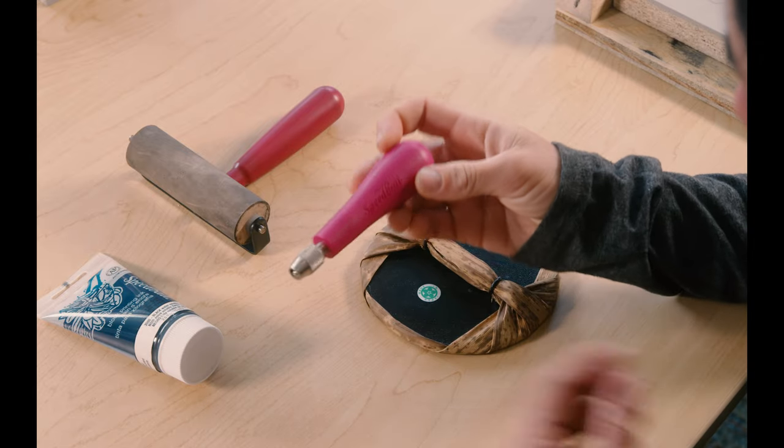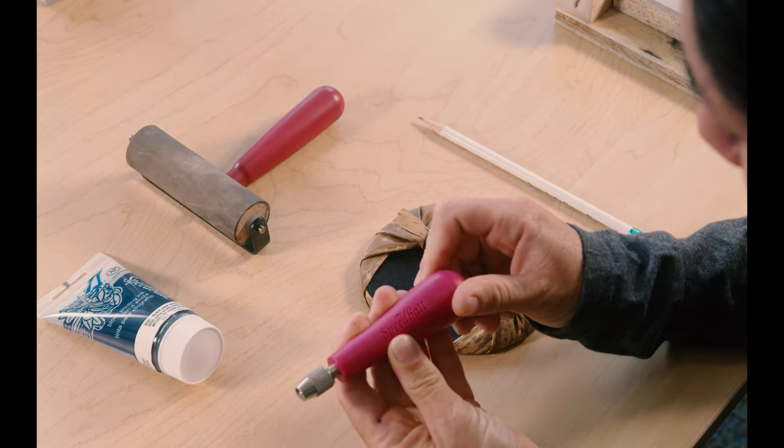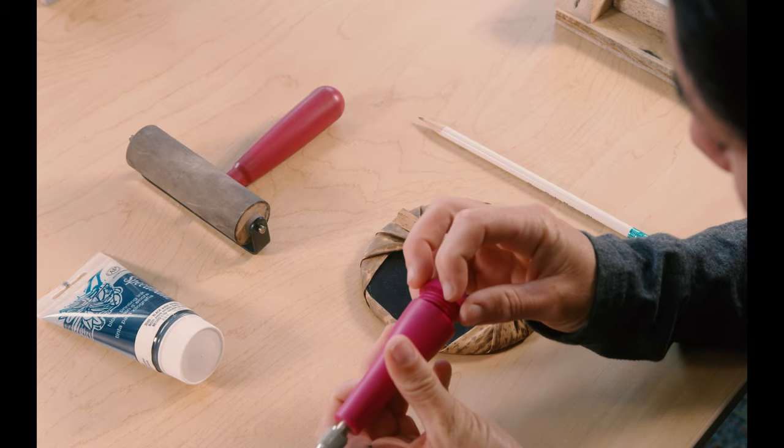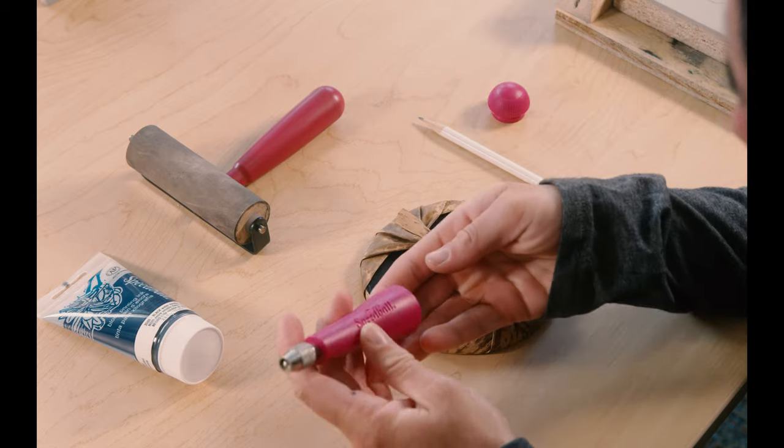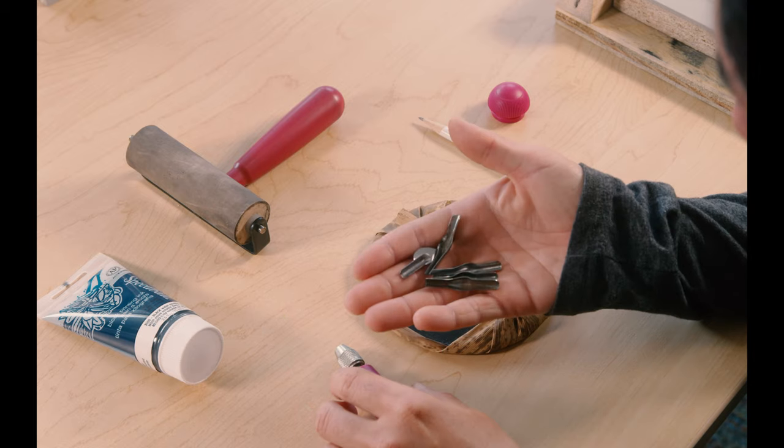All the materials are in the kit. These are the tools that are in the art kit. A speedball carver, and you'll see that if you open up the back, you'll have all kinds of carving tips in here.